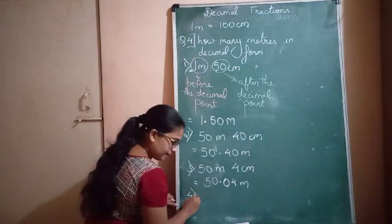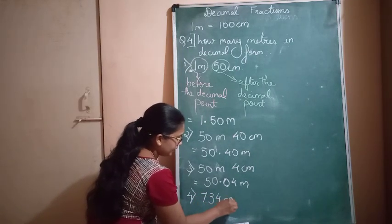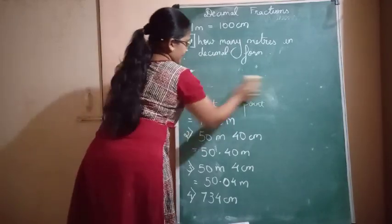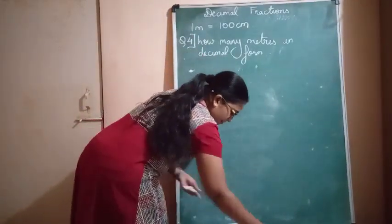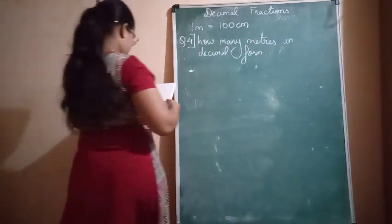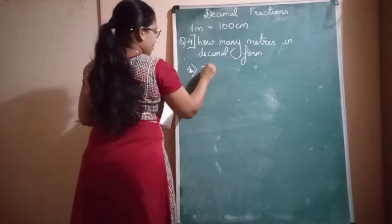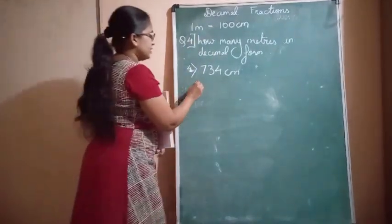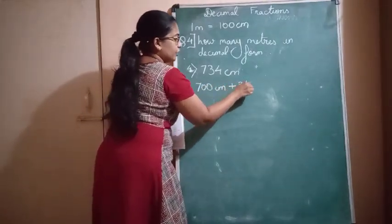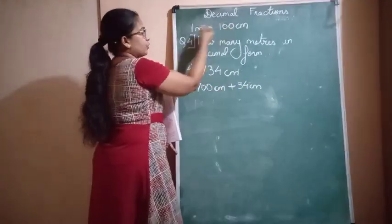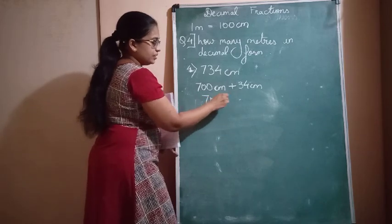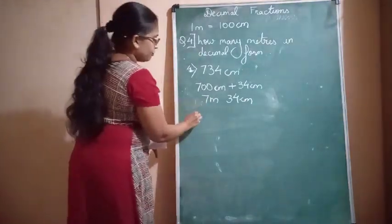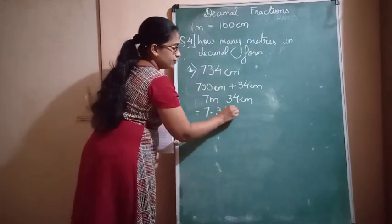The next question is 734 centimeters. Since the number is higher than 100, you can split 734 as 700 centimeters plus 34 centimeters. 700 centimeters is nothing but 7 meters, giving you 7 meters and 34 centimeters. This becomes similar to the previous question and therefore your answer is 7.34 meters.